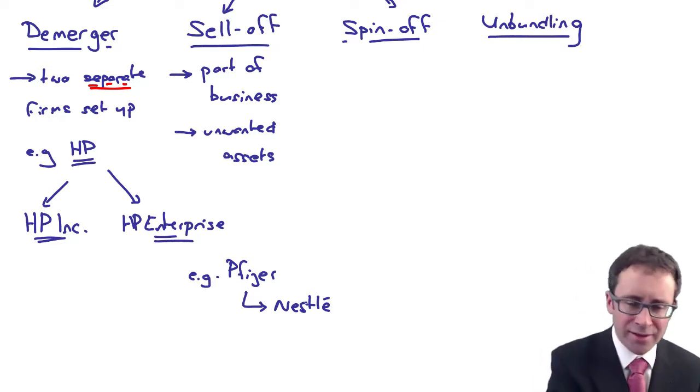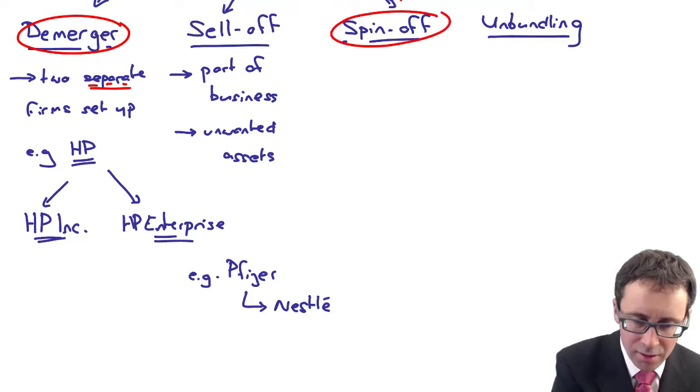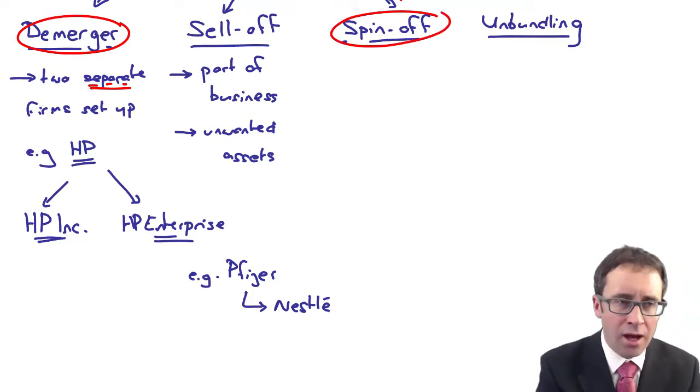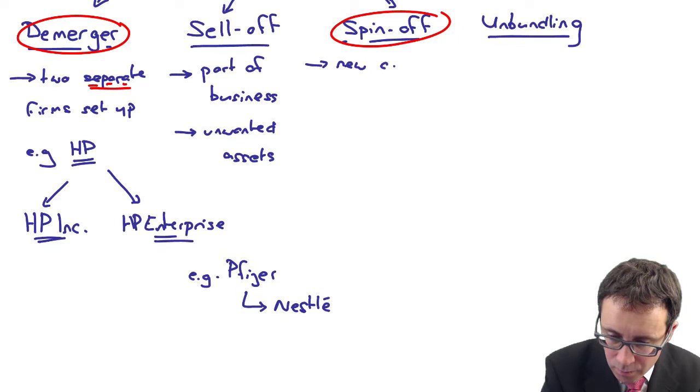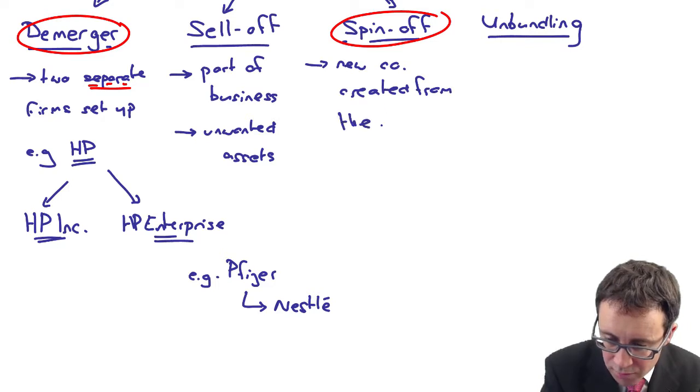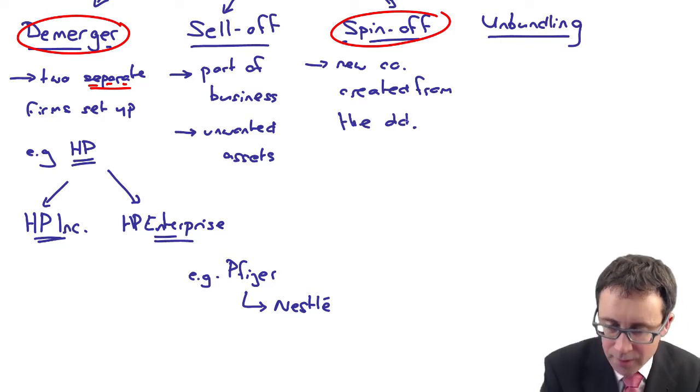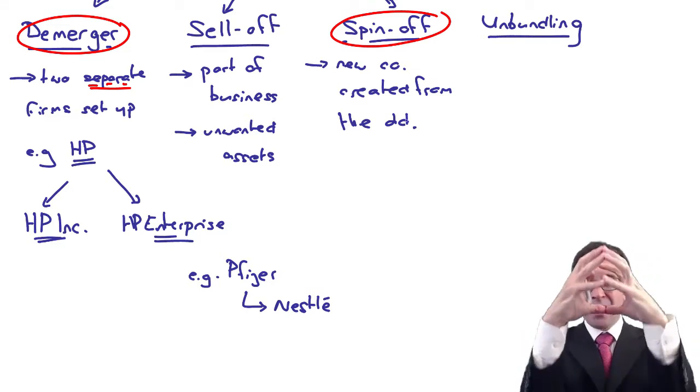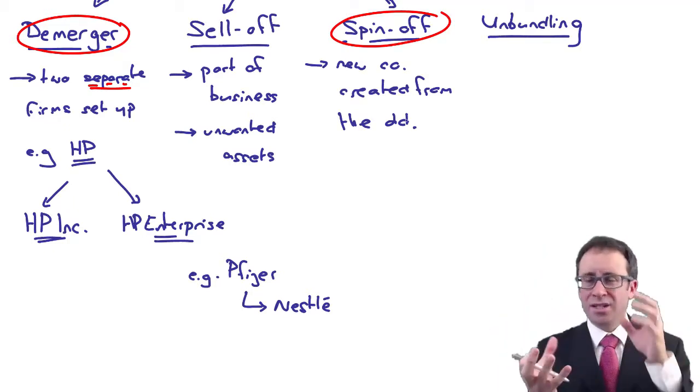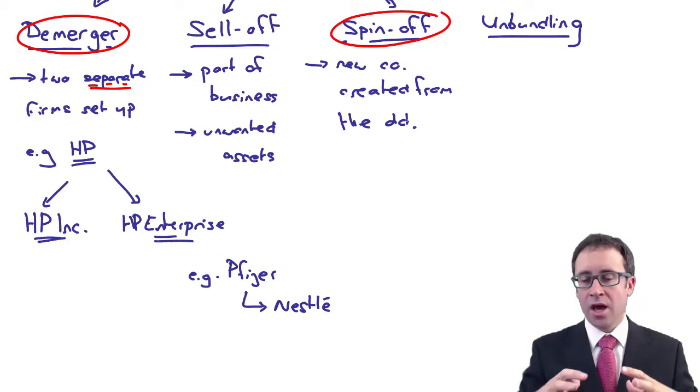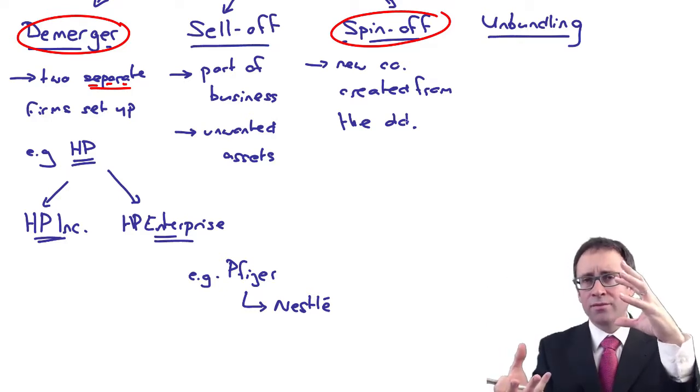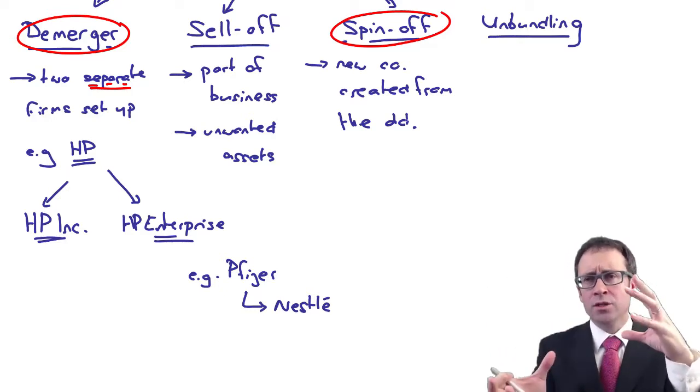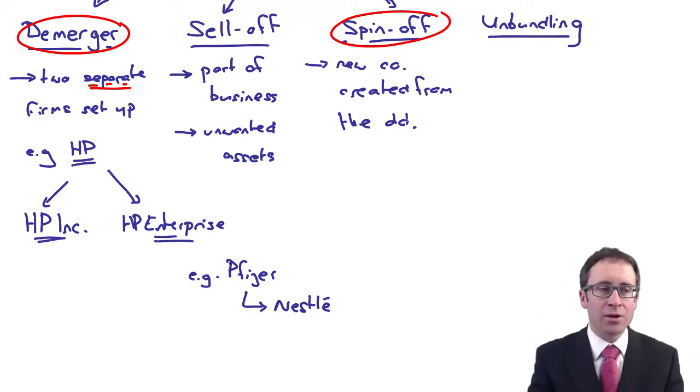A spin-off is effectively like a form of a demerger. What happens is that a new company is created which was previously part of the old one. You've got a big and large company. When a demerger happens, they split into two and that old one ceases to exist as an entity, which is what happened with HP. But with a spin-off, you have that large entity and it takes part of the business and spins it off, separates it out and forms it as part of a new business with its own separate legal identity.